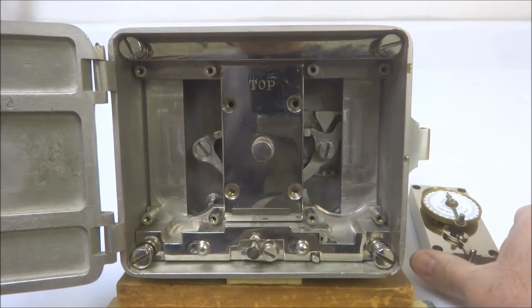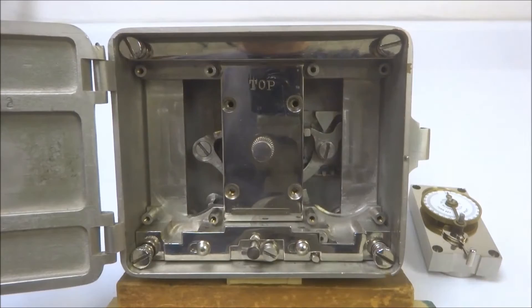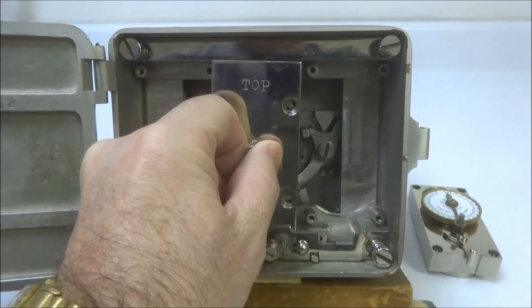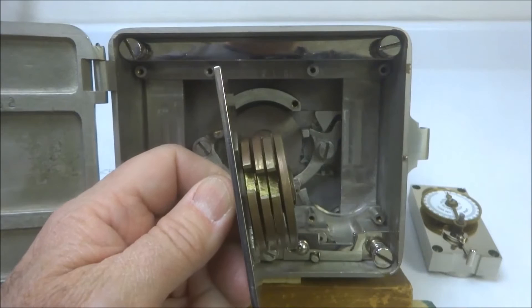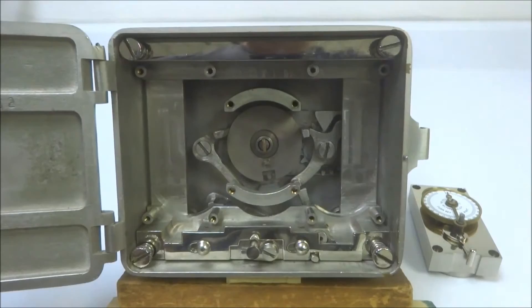And now what's left is this center section here, which contains the tumblers. This now comes away, and you can see the set of tumblers here. This is a four tumbler lock.